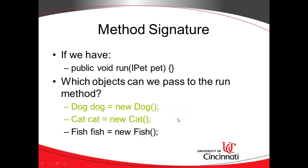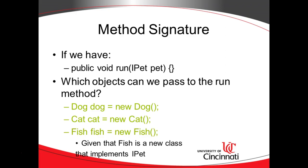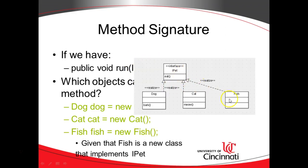Finally, consider 'Fish fish = new Fish' — can we pass this one in? Yes, with a caveat: given that Fish is a new class that implements IPet. This is where interfaces get really handy, because we've defined a set of methods we want a class to implement, which allows us to create future classes that implement this interface and all of its methods. Interfaces let us essentially add behavior onto classes that will be created in the future.